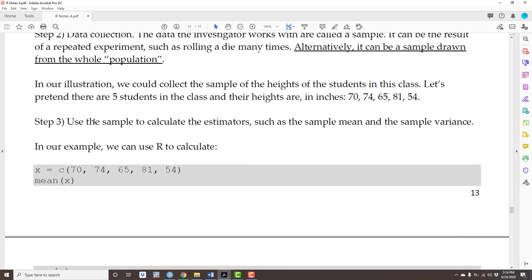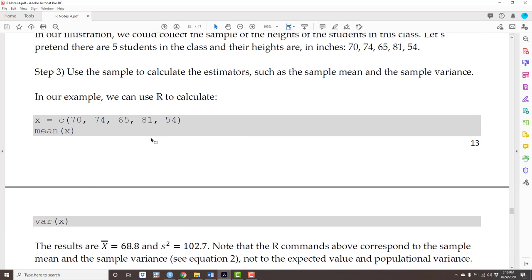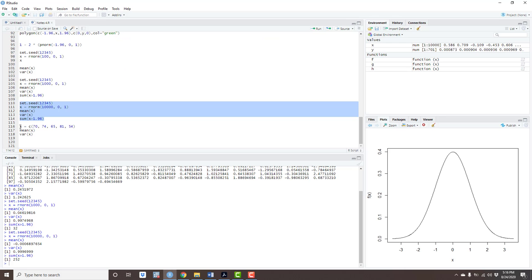Step three, use the data to calculate the estimators, such as the sample mean and the sample variance. In our example, let's use R to calculate the mean and the variance. I'm defining X as our hypothetical sample of human heights in the class. So, here I'm defining my vector. Then I take the mean and I take the variance.